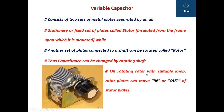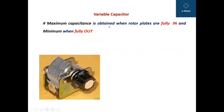On rotating the rotor with a suitable knob, the rotor plates can be moved in or out of the stator plates. Maximum capacitance is obtained when the rotor plates are fully in, and minimum when fully out. From the picture shown, the capacitance is currently minimum because the rotor plates are fully out of the stator plates. When these plates are fully moved in by rotating the shaft, we get maximum capacitance.